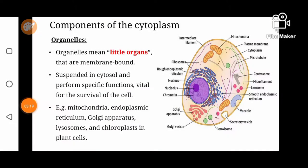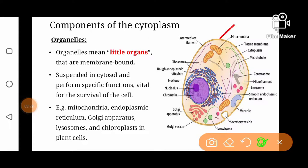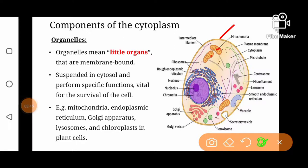In this diagram, you can see different organelles as well as the cytosolic part of cytoplasm. This is the cell membrane and this is the nucleus or nuclear membrane. So this part is known as cytoplasm. In cytoplasm, this region not occupied by any organelles is known as cytosol, while these are various types of organelles in the cell.